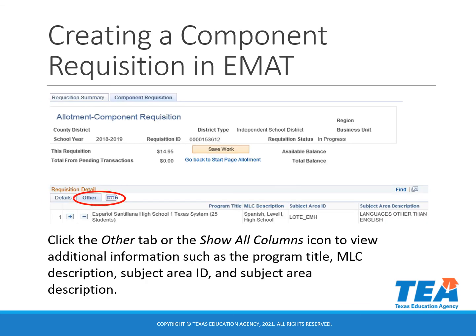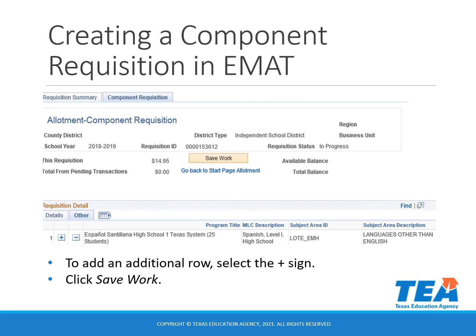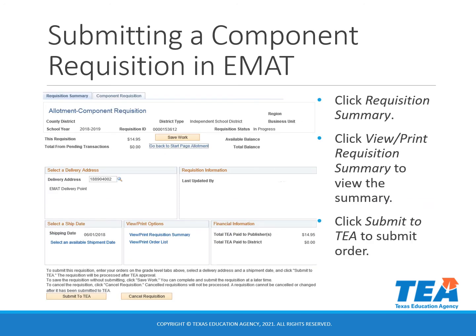Click the other tab or the Show All Columns icon to view additional information such as the program title, the MLC description, subject area ID, and the subject area description. To add an additional row, select the plus sign and remember to save your work. To submit a component requisition, click on the Requisition Summary tab. Click View Print Requisition Summary to view the summary, and then click Submit to TEA to submit the order.